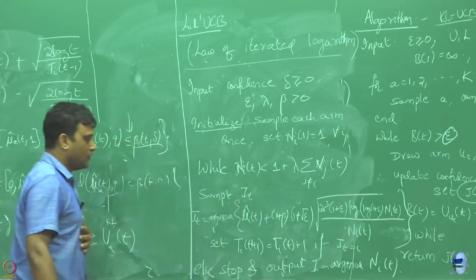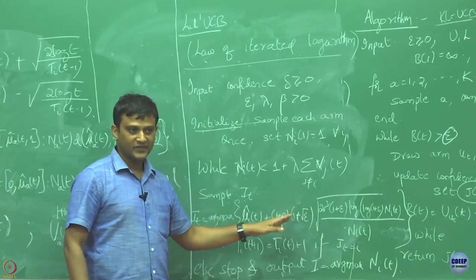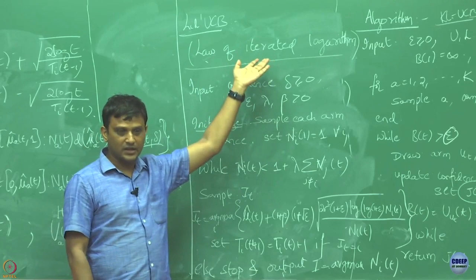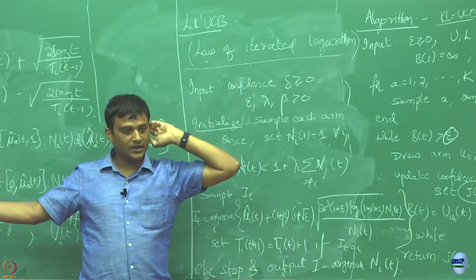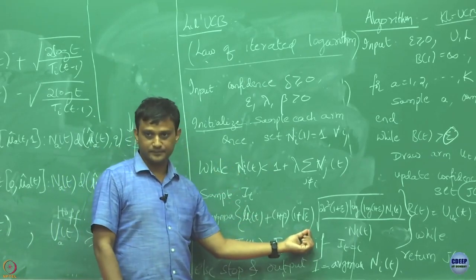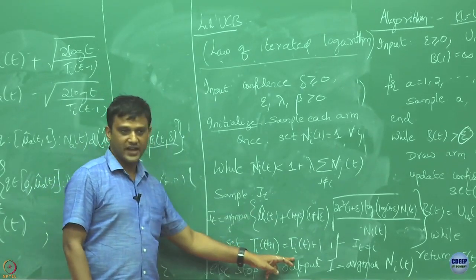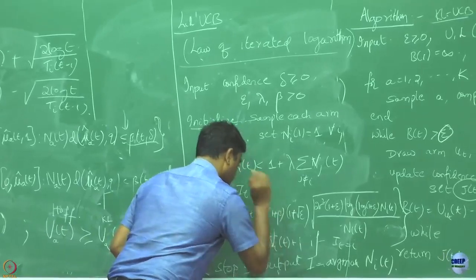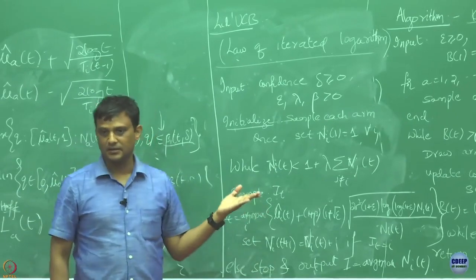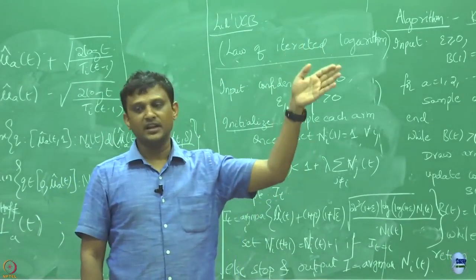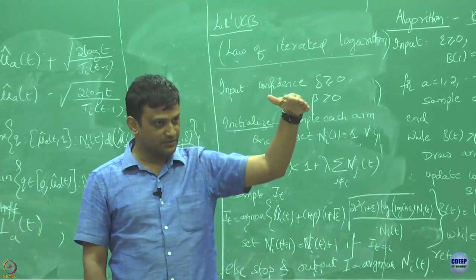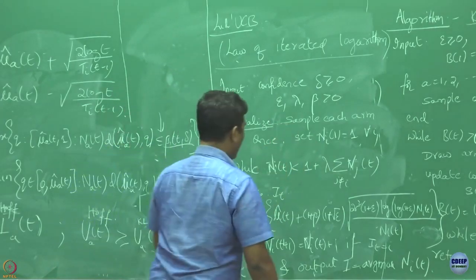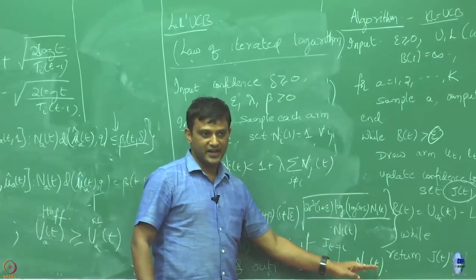When it continues it is going to always play the arm which is again this algorithm defines some UCB index that is coming from some new concentration bound called law of iterated logarithm. Not going to that, this is another concentration bound like based on Hoefding's and KL-UCB. They are going to define UCB index like that and whenever they are going to play I_T they are going to update the count of that, for others no count is updated. So here it should be N_i. Once it so happens that number of pulls of a particular arm happens to be larger than the sum of pulls of all the other arms then this guy is going to stop.